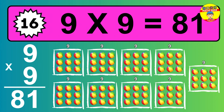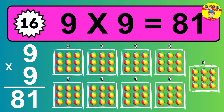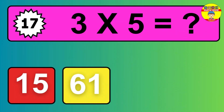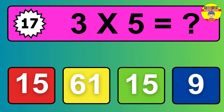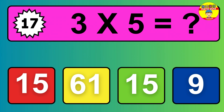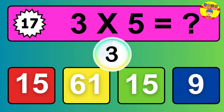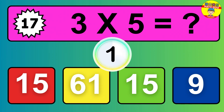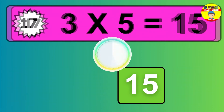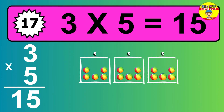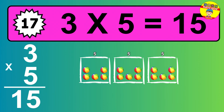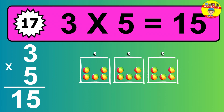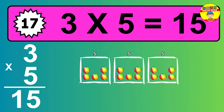To calculate, we have nine groups with nine balls each one. So how many balls do we have? 81 balls. Question 17. Three times five equals what? The answer is three times five is fifteen. To calculate, we have three groups with five balls each one. So how many balls do we have? 15 balls.